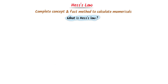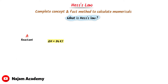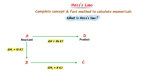Now, what is Hess's Law? Consider reactant A. Let it absorb ΔH = 24 kilojoule energy and convert to product D. Let this whole reaction occur in one step. Now consider that this reaction takes place in multiple steps to form product D. Let this A reactant absorb ΔH₁ = 12 kilojoule and convert to B. This B absorbs ΔH₂ = 8 kilojoule and converts to C.